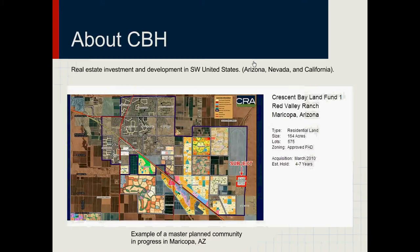A little bit about Crescent Bay Holdings. It's a real estate and investment development company in the southwest United States, based out of Scottsdale. We have land in Arizona, Nevada, and California. This is an example of Red Valley Ranch — a master planned community in progress in the city of Maricopa, Arizona. This will all be broken down into different land plans, different neighborhoods, all the way down to houses. They also do asset management for land, multifamily housing, office buildings, hospitality, and even mixed-use properties. They're new to getting into urban renewal, but their main goal is to acquire and develop residential and commercial land in the southwest United States.